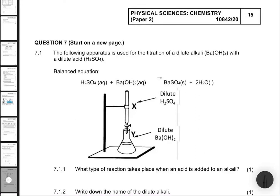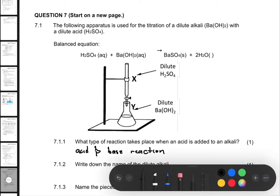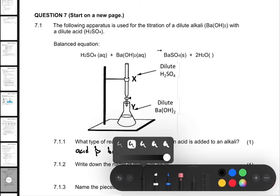The following apparatus is used for the titration of a dilute alkali with a dilute acid. We are given a balanced equation. Question 7.1.1 asks what type of reaction takes place when an acid is added to an alkali. An alkali is basically a base, so we have an acid-base reaction. Another name for an acid-base reaction is neutralization, so you can write 'acid and base' or 'neutralization'.